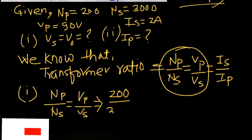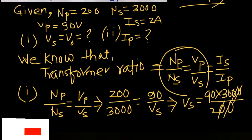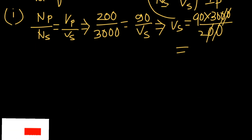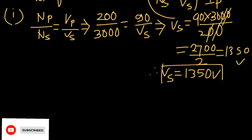The value of NP is 200, NS is 3000, and VP is 90 volts. So: 200/3000 = 90/VS. Rearranging, VS = 90 × 3000 / 200. The two zeros cancel, giving 2700/2, which equals 1350. So VS = 1350 volts — that is the secondary voltage, and that is my first answer. I have written the solution clearly, and I will get full marks for this answer.